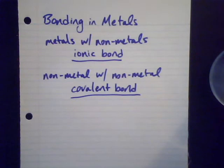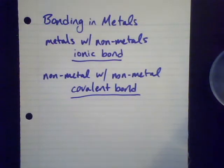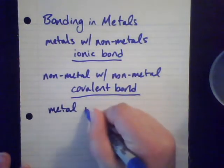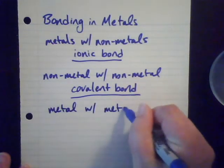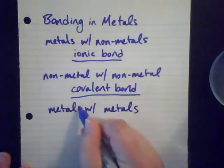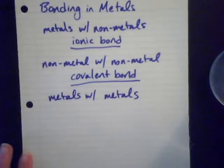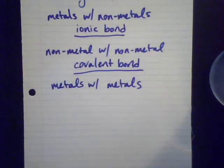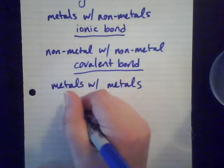So with metals and non-metals, we have ionic bonds. With non-metals and non-metals, covalent bonds. Within covalent bonds, we have both polar and non-polar bonds, and there's a separate video just on that part. But we haven't really talked about metals with metals. So for bonding two metals together, what I want to emphasize here is that this is not a chemical bond in any sort of traditional sense.